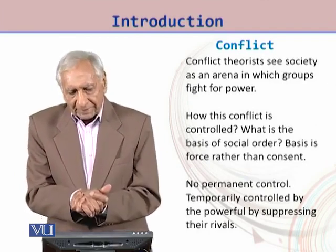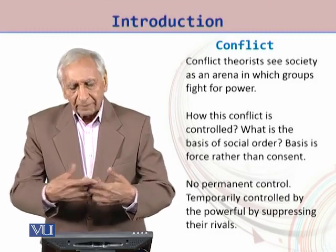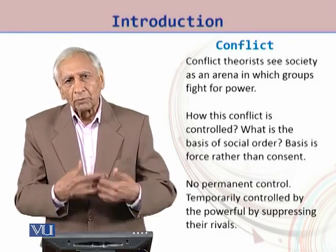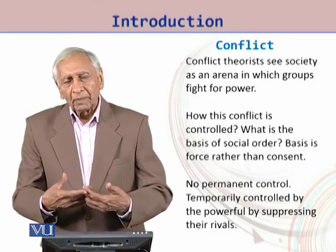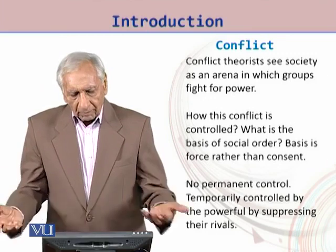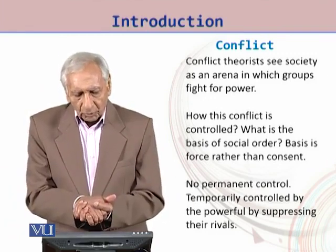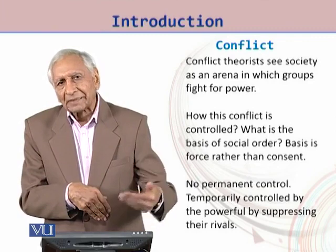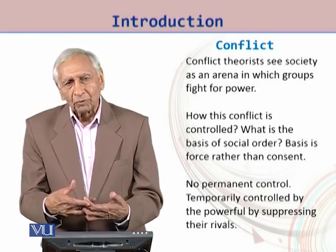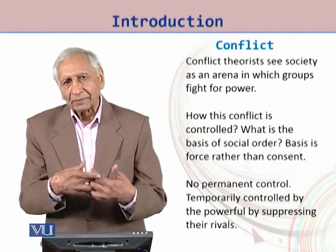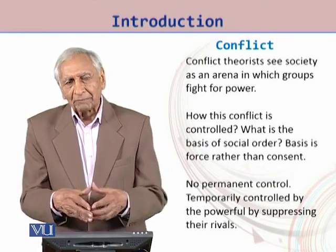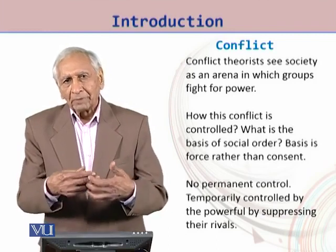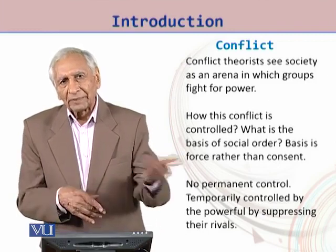Whereas conflict theorists see society as a big arena where different groups fight for power. Different groups look for power over other groups. In the view of the conflict theorists, conflict might be controlled, but not by consensus. Conflict is controlled, in this perspective, by power — by suppressing the people who are less powerful and who might be conflicting with the interests of the powerful.